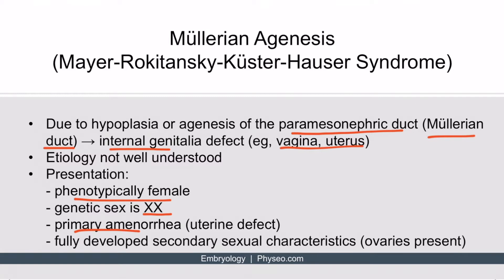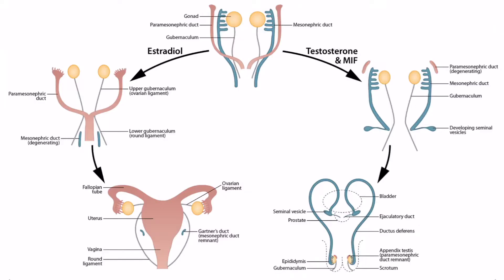Another key feature is that these patients have fully developed secondary sexual characteristics, such as breast development. This is because the ovaries are present, so estrogen is produced and these characteristics are still developed. From this image, we can see that if the paramesonephric duct, or Müllerian duct, does not form properly, then the patient will lack a uterus and a vagina.